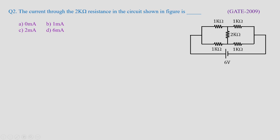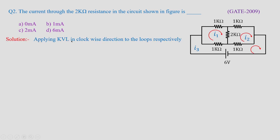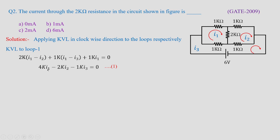If the voltage is asked, that is also 0 volts. This is the shortcut to remember while solving competitive exam problems. For GATE 2009, if you want to solve theoretically, apply KVL to the loops in clockwise direction. I have taken I1, I2, I3 as three loop currents all assumed to be flowing in clockwise direction, then apply KVL individually to Loop 1, Loop 2, and Loop 3.